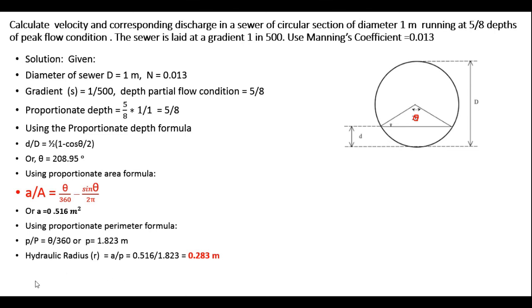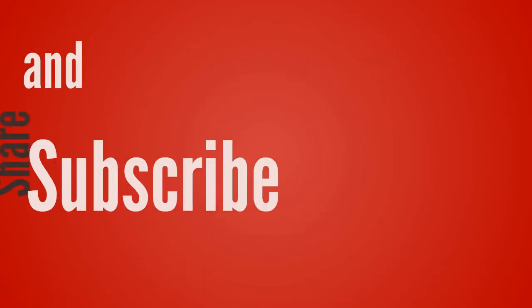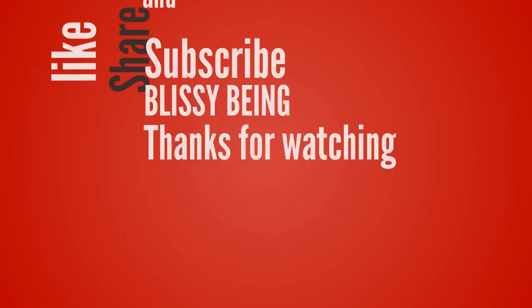Finally, applying Manning's formula v = (1/n) × r^(2/3) × s^(1/2), we compute the velocity in the sewer as v = 1.482 meters per second. The corresponding discharge is given by Q = a × v, and substituting the computed values, the discharge in the sewer is found to be 0.764 cubic meters per second.